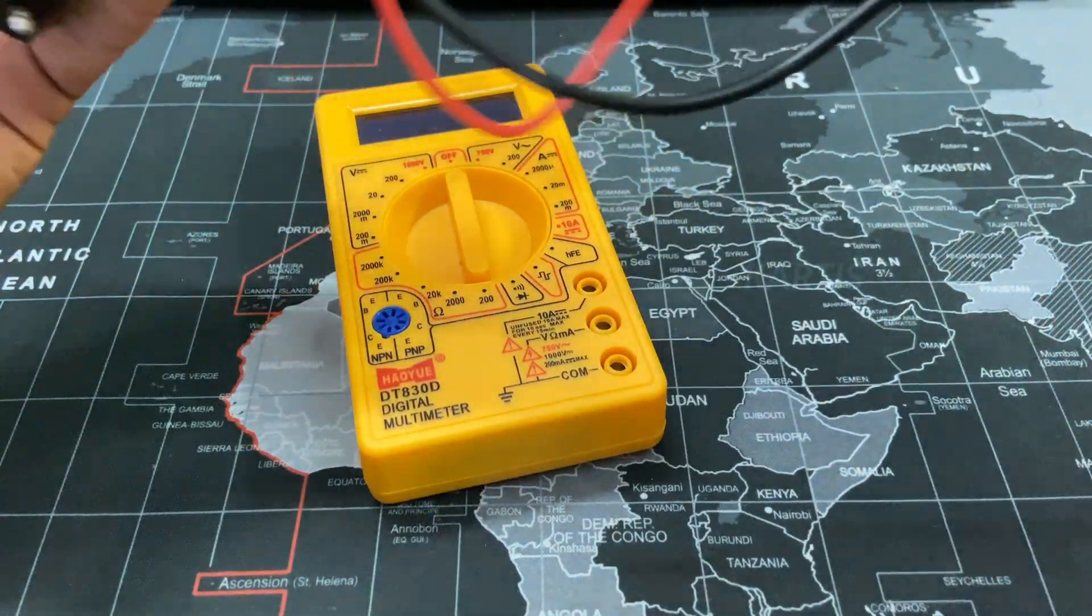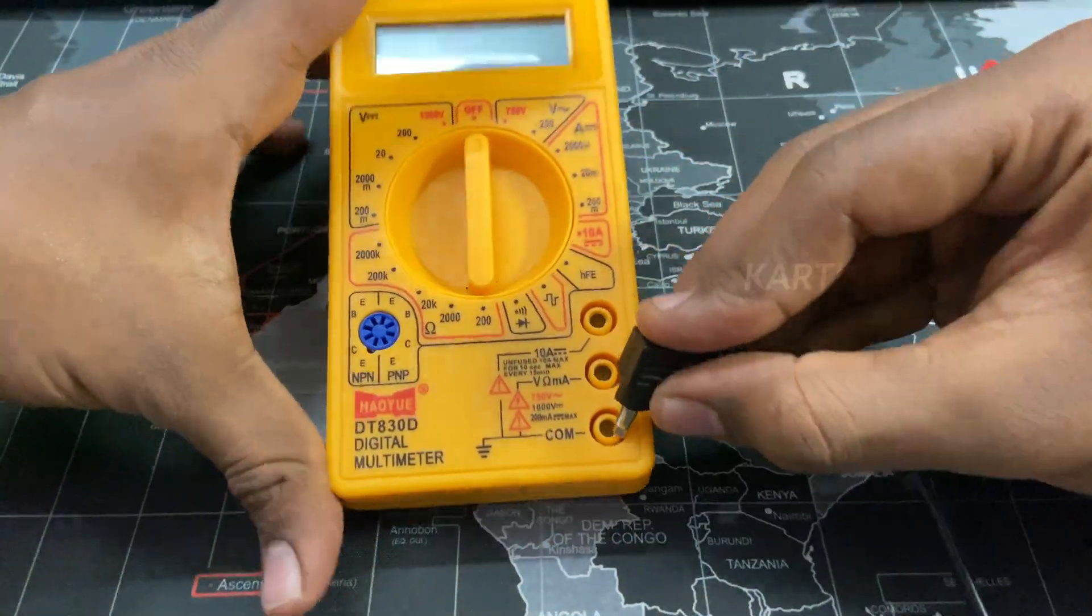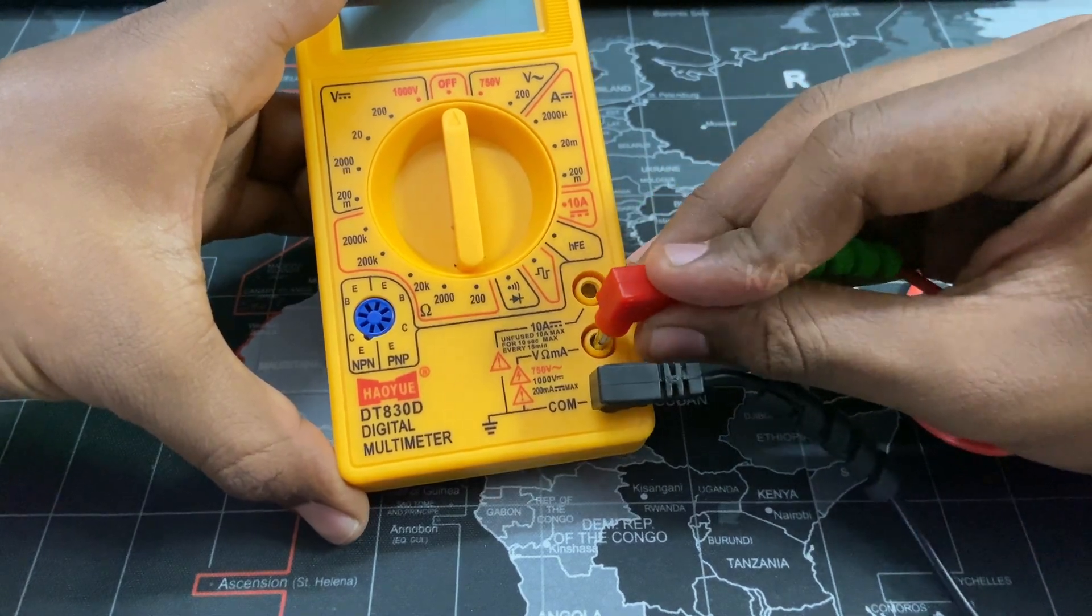Let's attach the wires here too. First, connect the black lead in common. Then, put the red lead in the second hole.